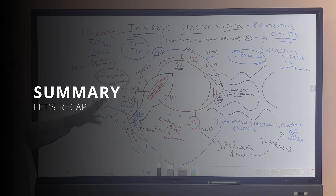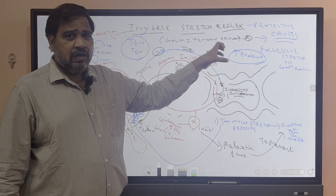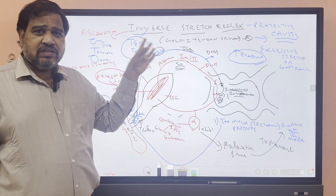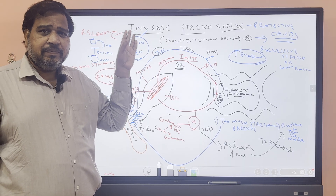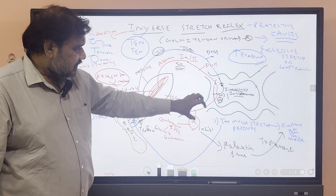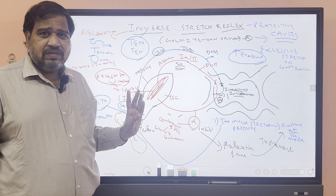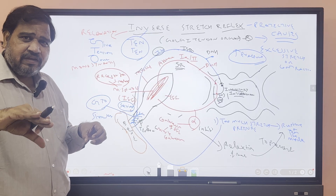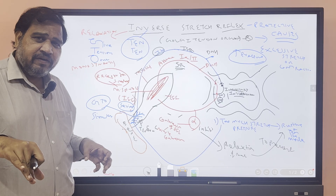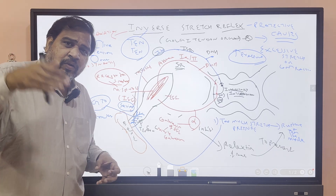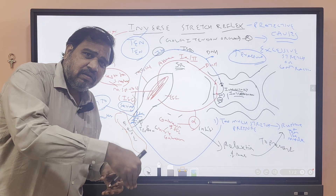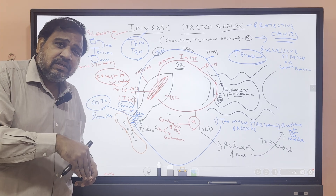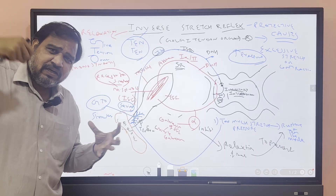Quick summary: Today I discussed the receptors of inverse stretch reflex — Golgi tendon organ. The function of Golgi tendon organ is to prevent rupture of the muscle. Inverse stretch reflex is an example of disynaptic reflex. The red color is stretch reflex; the blue color is inverse stretch reflex. The inverse stretch reflex is triggered only when there is too much stretch, contraction, or pressure on the Golgi tendon organ.